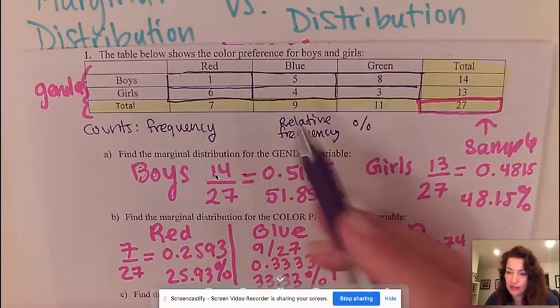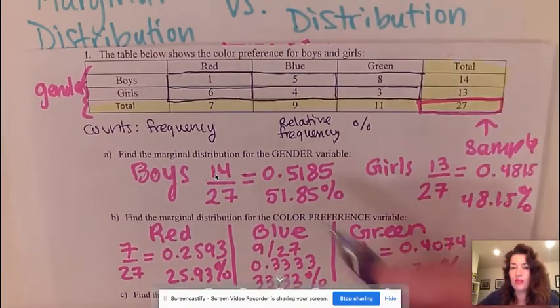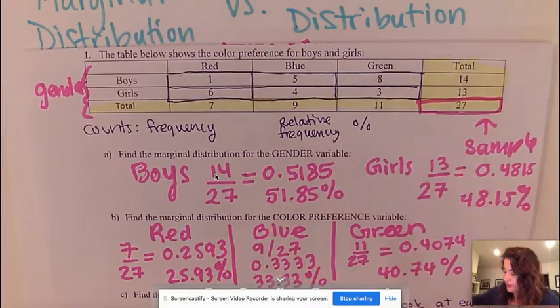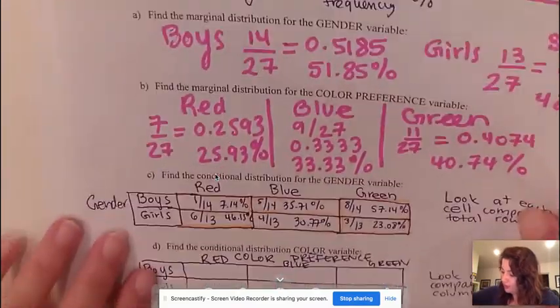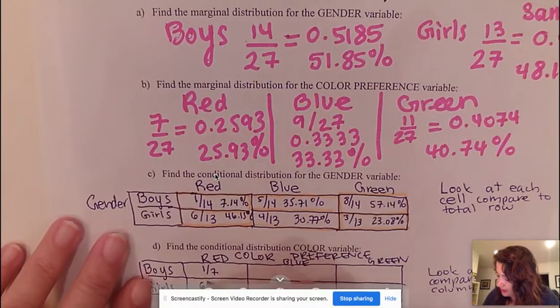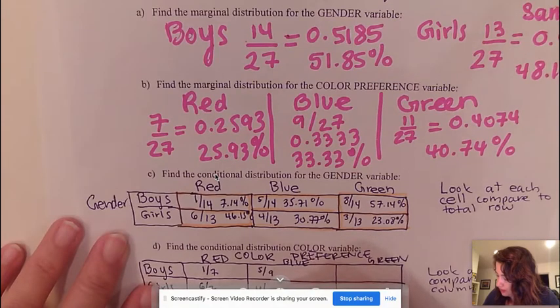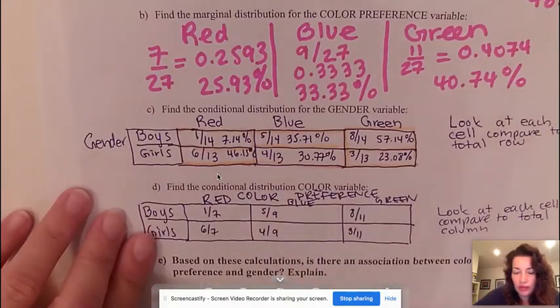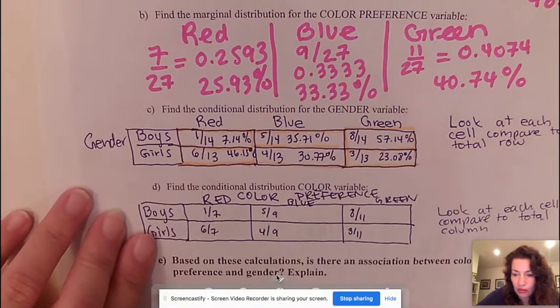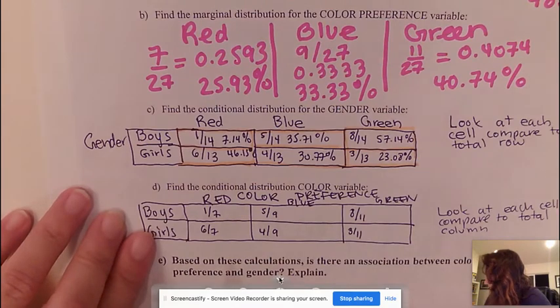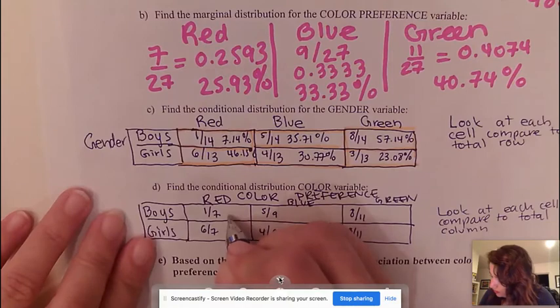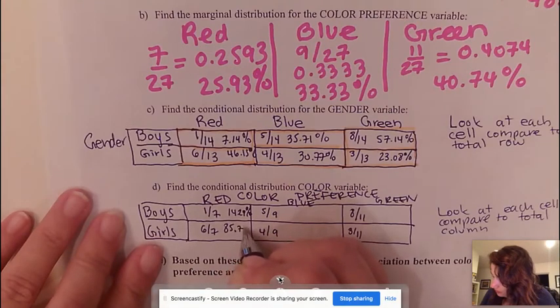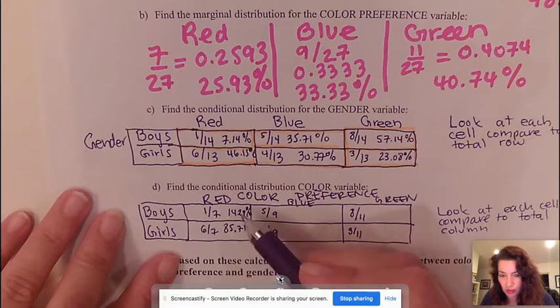And 1 out of 7 and 6 out of 7 is 7 out of 7, which makes sense, that's 100%. Then we're going to do the same thing for the top. We're going to say 5 out of 9 and 4 out of 9, 8 out of 11 and 3 out of 11. So rewriting that here I'm going to have 1 out of 7, 6 out of 7, 5 out of 9, 4 out of 9, 8 out of 11, and 3 out of 11. When you look down you can see that your total adds up to 100%. Now calculating this as a percentage that would give us 14.29% and this would be 85.71%.